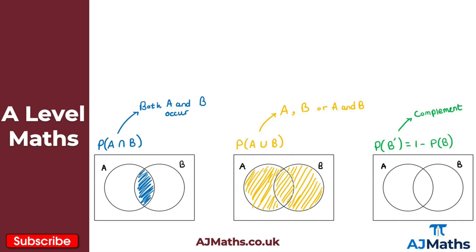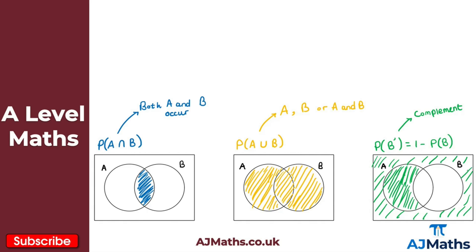To shade B complement on the Venn diagram — this is everything but B. So we shade A, but we don't include the intersection because we don't want B. We also shade the outside region. So B complement is everything inside A excluding the intersection, and everything on the outside.